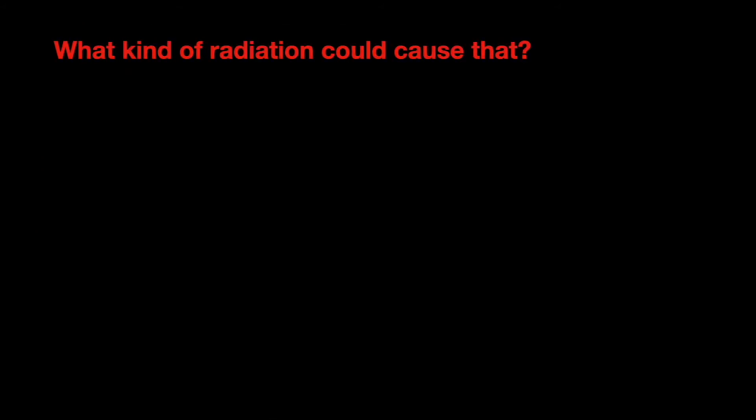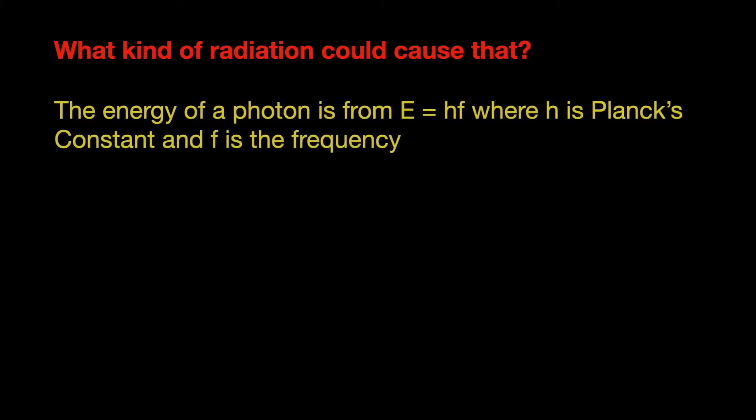To calculate what kind of radiation this will cause, we use Planck's constant. The energy of a photon is equal to hf, where h is Planck's constant and f is the frequency of the radiation.